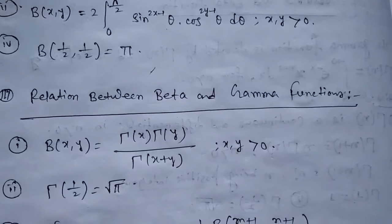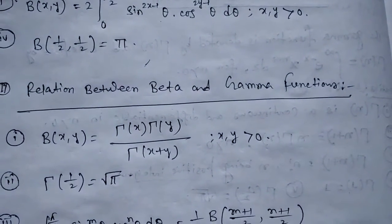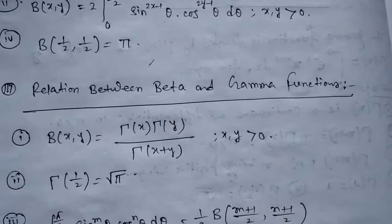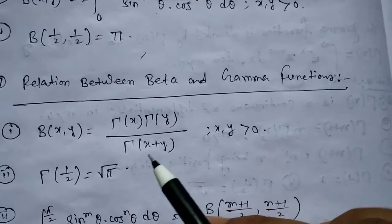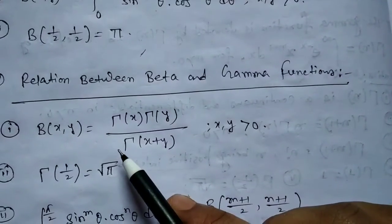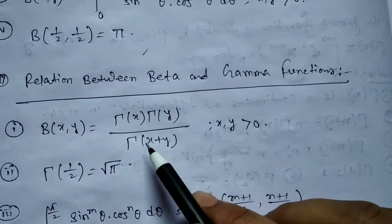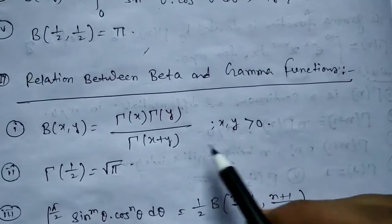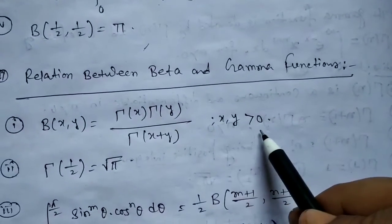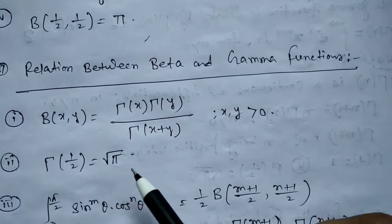Let us consider some important relations between Beta and Gamma functions. Relation 1: β(x, y) = Γ(x) · Γ(y) / Γ(x+y), for x, y greater than 0. Relation 2: Γ(1/2) = √π.